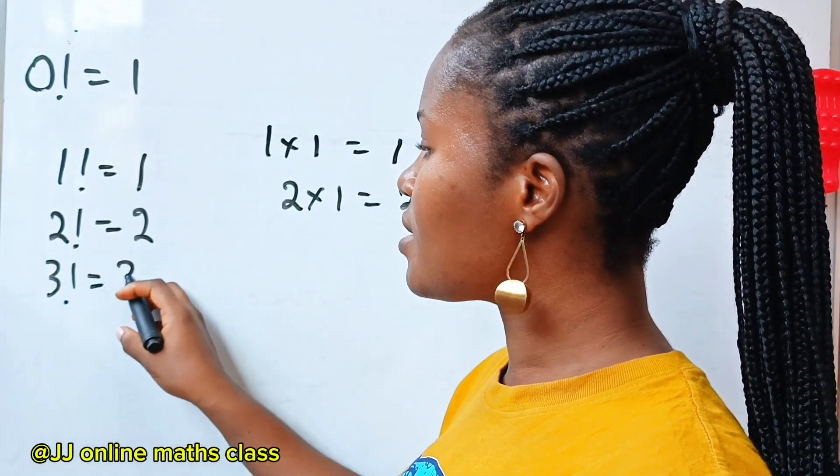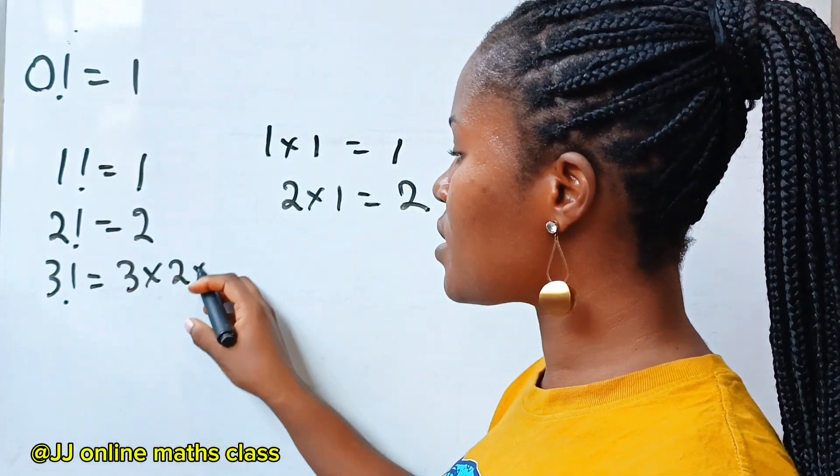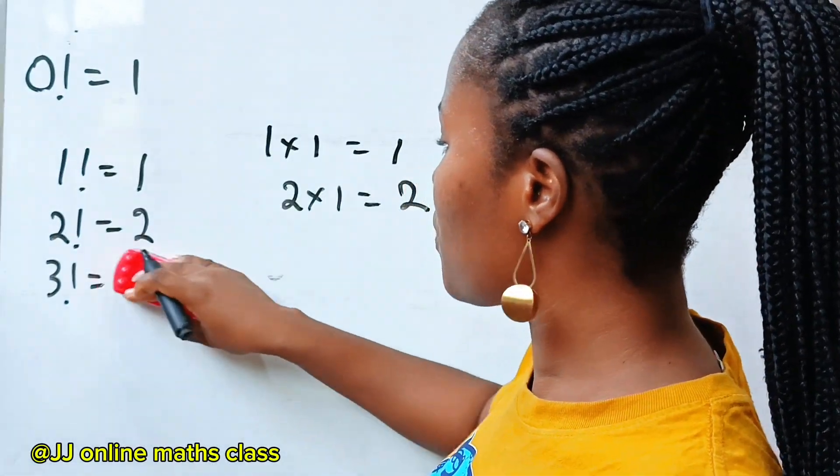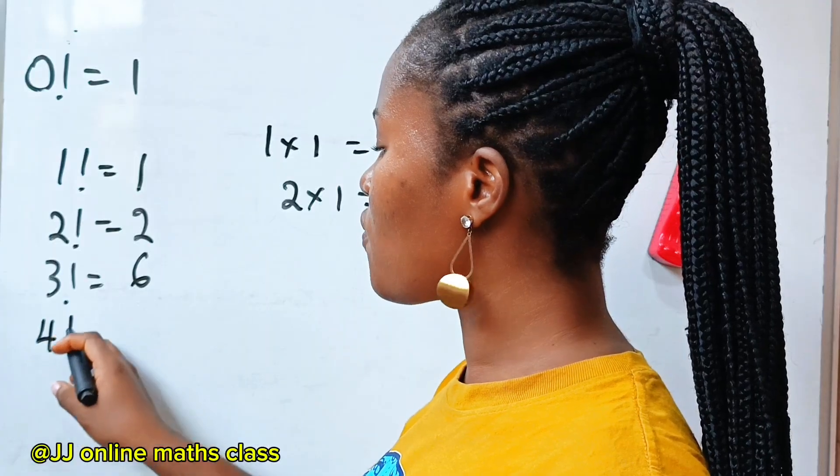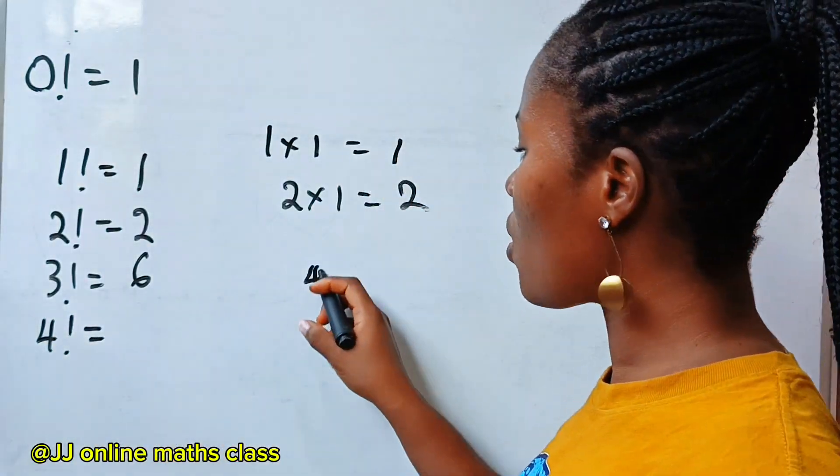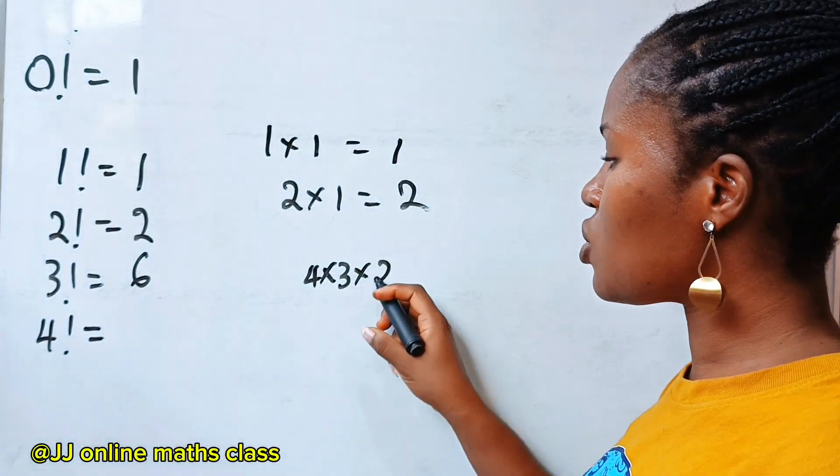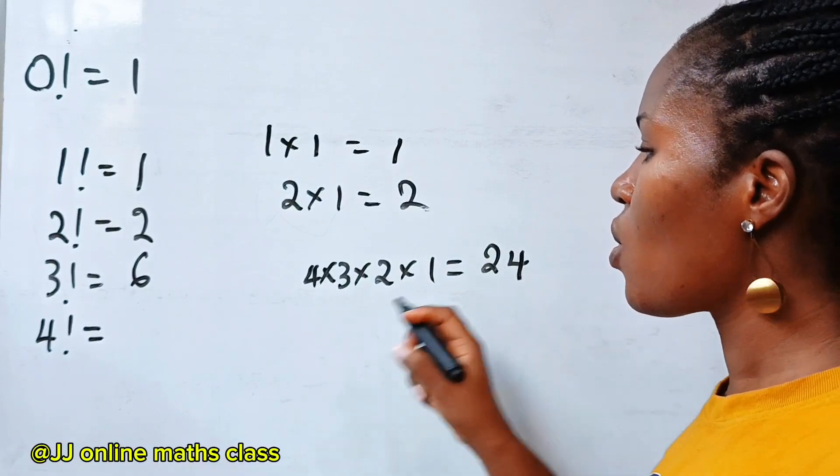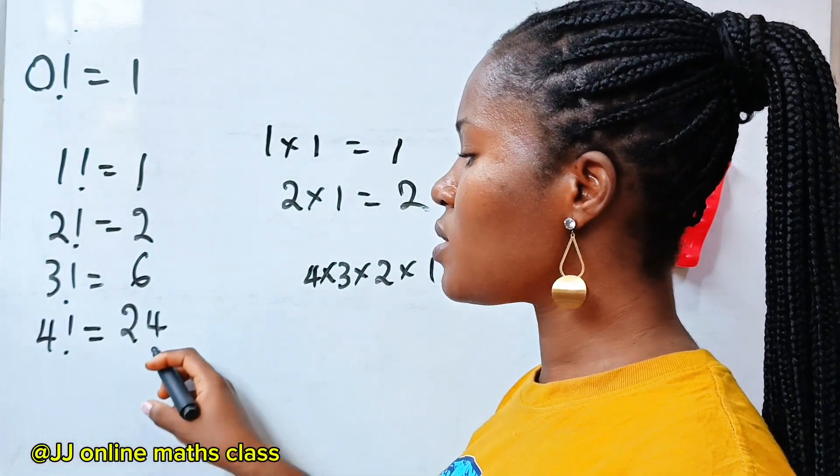So we have 2. Now, 3 factorial is 3 times 2 times 1, which is 6. Then 4 factorial is 4 times 3 times 2 times 1, which will give us 24.